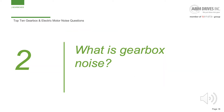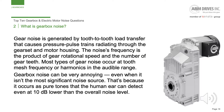Number 2: What is gearbox noise? Gear noise is generated by tooth-to-tooth load transfer that causes pressure pulse trains radiating through the gear set and motor housing. The noise's frequency is the product of gear rotational speed and the number of gear teeth. Most types of gear noise occur at tooth-mesh frequency or harmonics in the audible range. Gearbox noise can be very annoying even when it isn't the most significant noise source, because it occurs as pure tones that the human ear can detect even at 10 dB lower than the overall noise level.